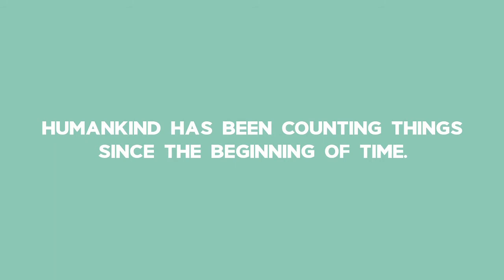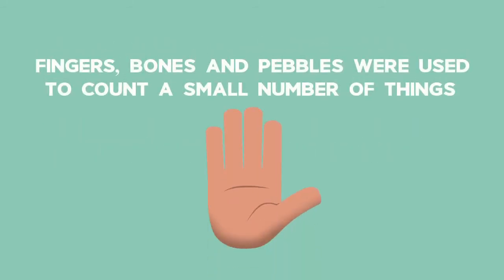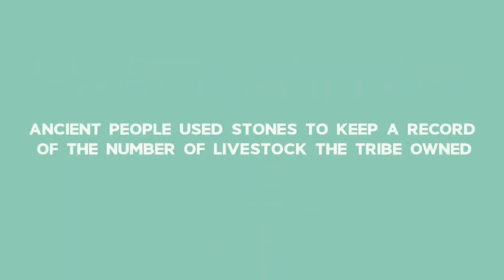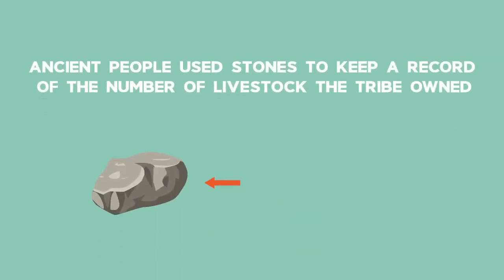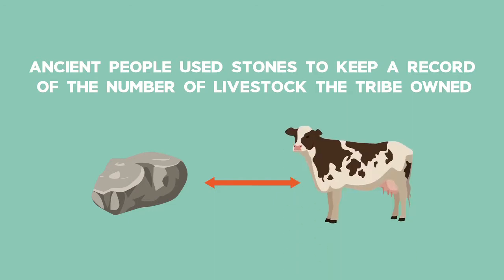Humankind has been counting things since the beginning of time. Fingers, bones and pebbles were used to count a small number of things. Ancient people used stones to keep a record of the number of livestock the tribe owned.